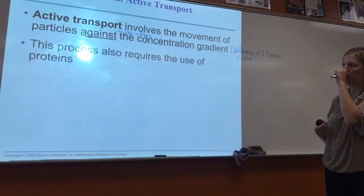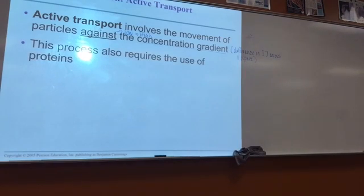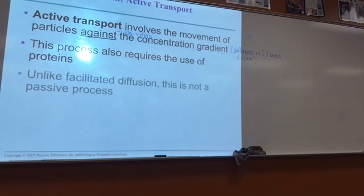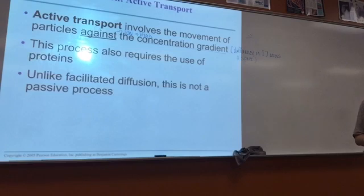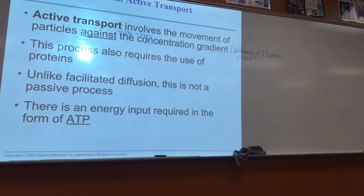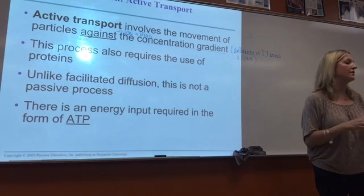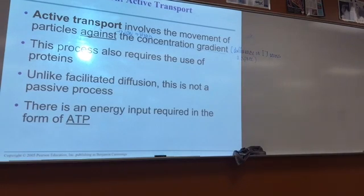This process also requires the use of proteins to move molecules against the concentration gradient. Unlike facilitated diffusion, this is not a passive process — it requires energy. The main energy molecule in cells is ATP. So there's an energy input required in the form of ATP in order to move molecules against the concentration gradient.